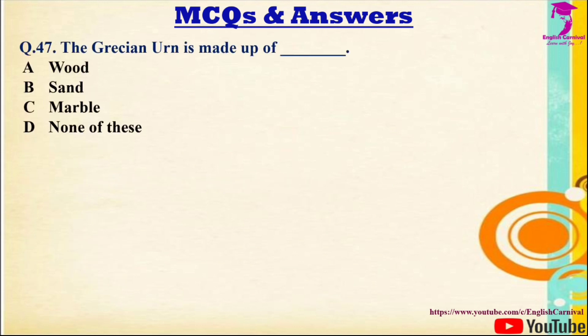Question 47: The Grecian Urn is made up of — Options: A) Wood, B) Sand, C) Marble. Correct answer is C — Marble.